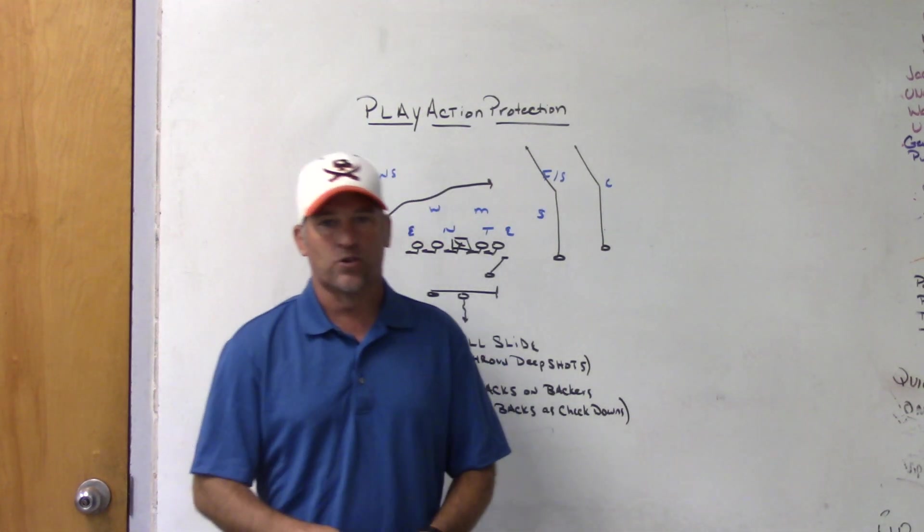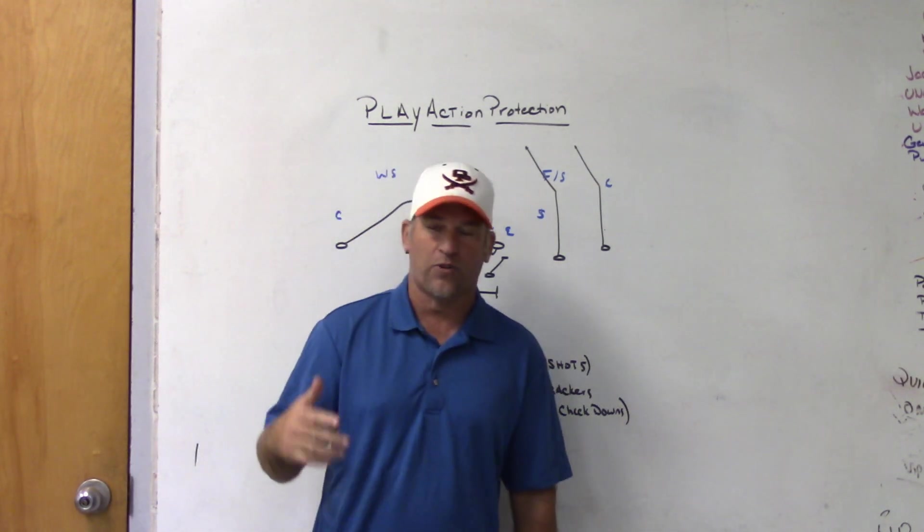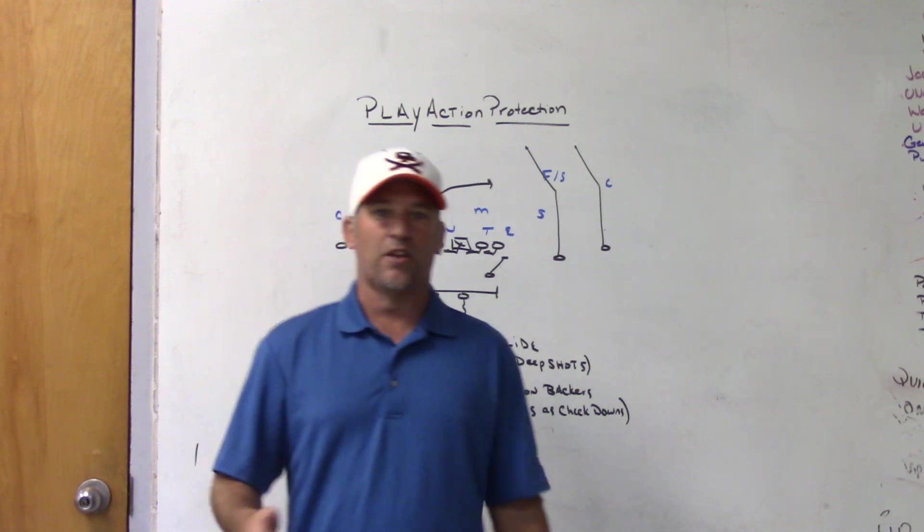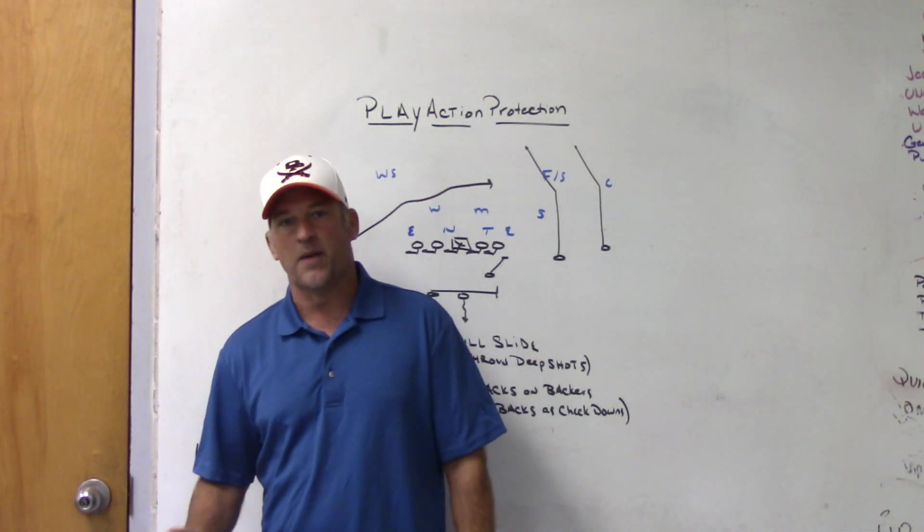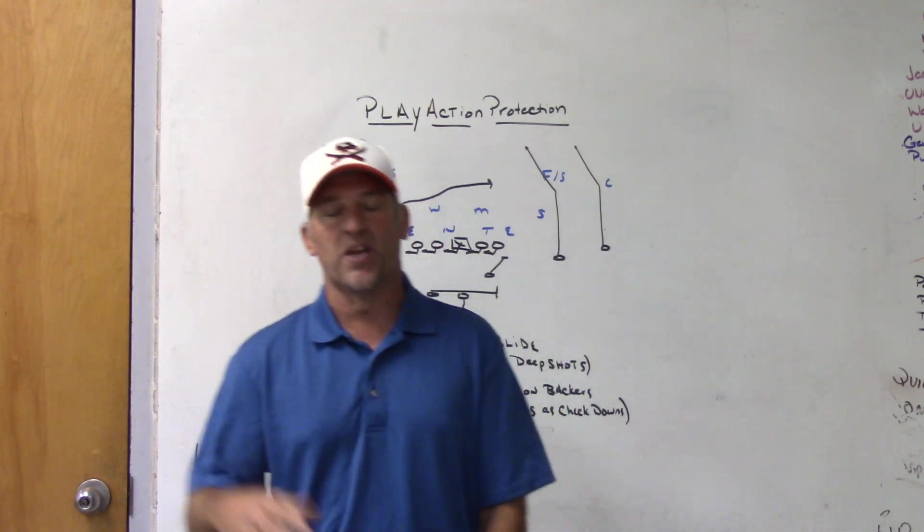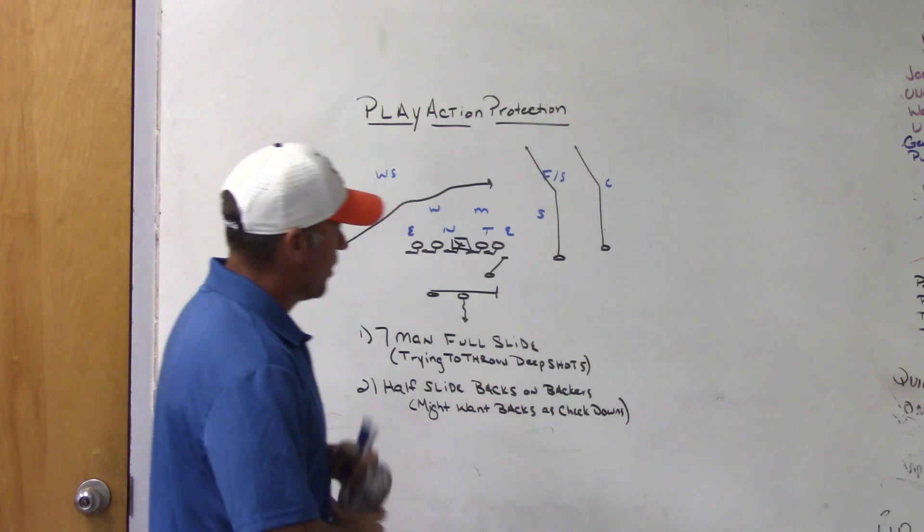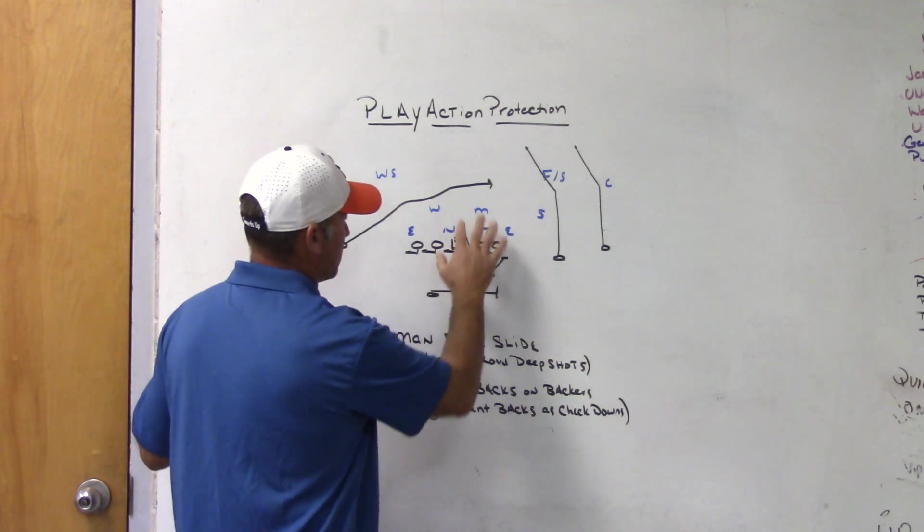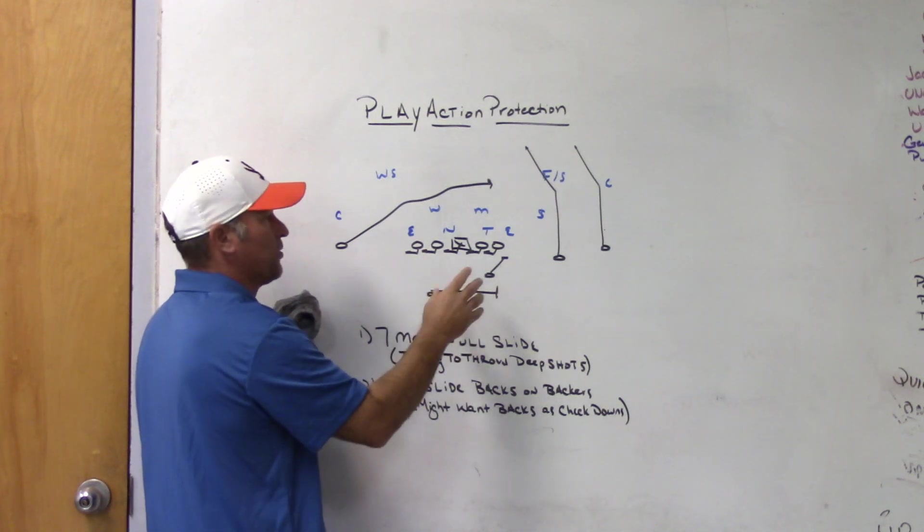So it gives us a seven-man protection because for us, for me at least, this is just me philosophically, when I throw a play action pass, I want to try and throw the ball down the field. So we're going to have routes drawn up here. I've got double posts drawn up with a climb route on the back side.